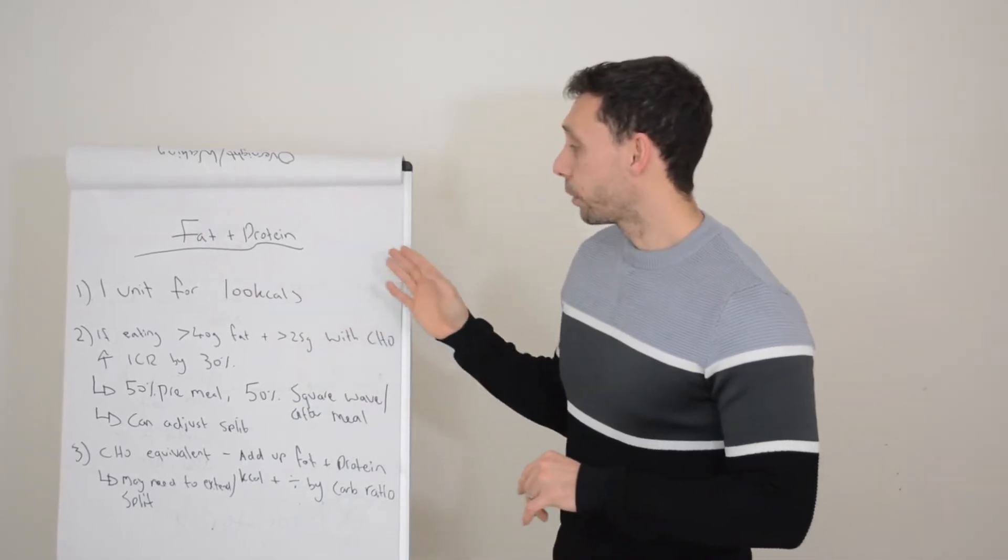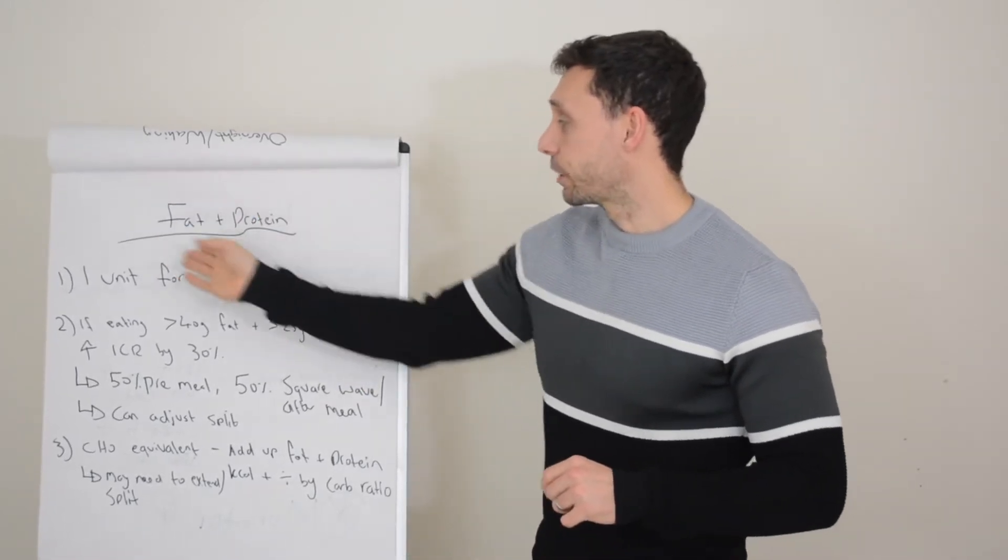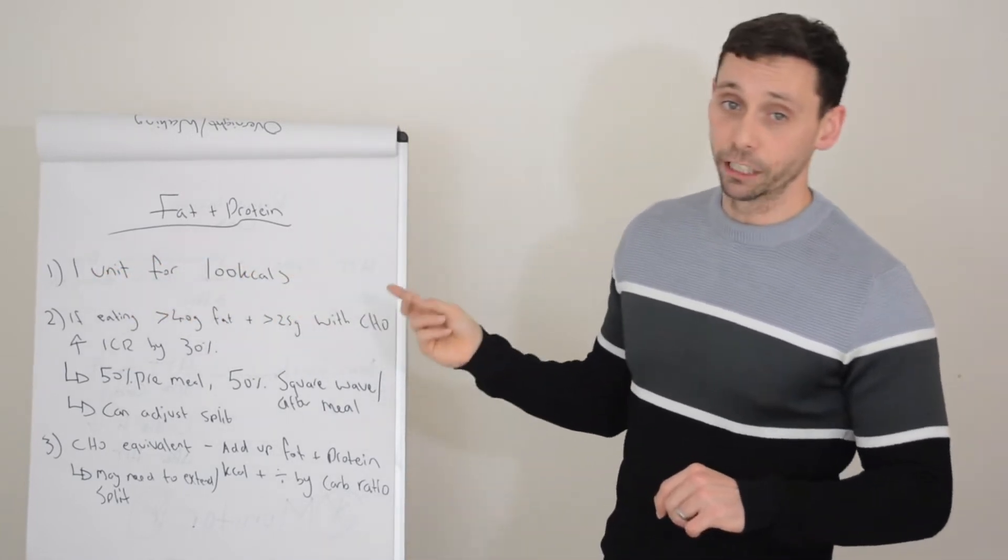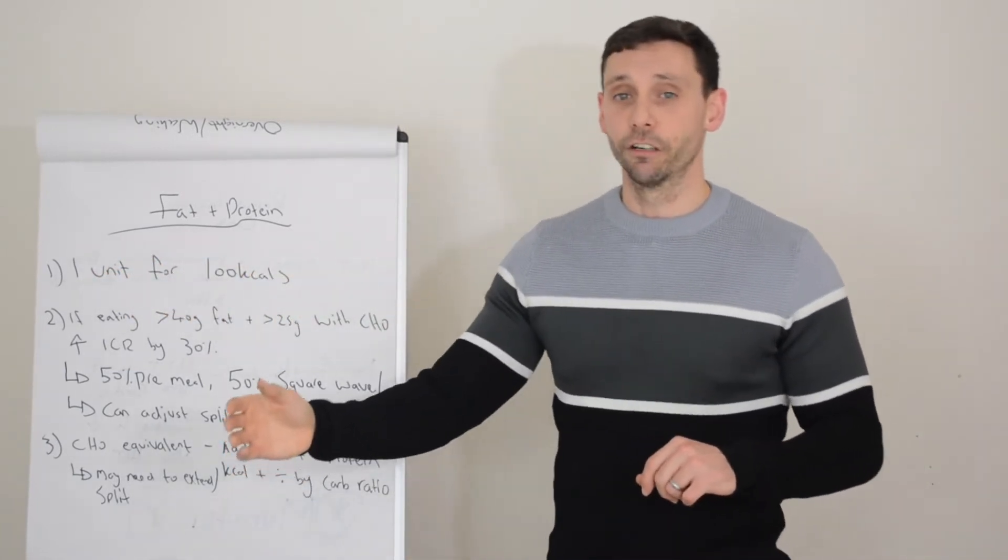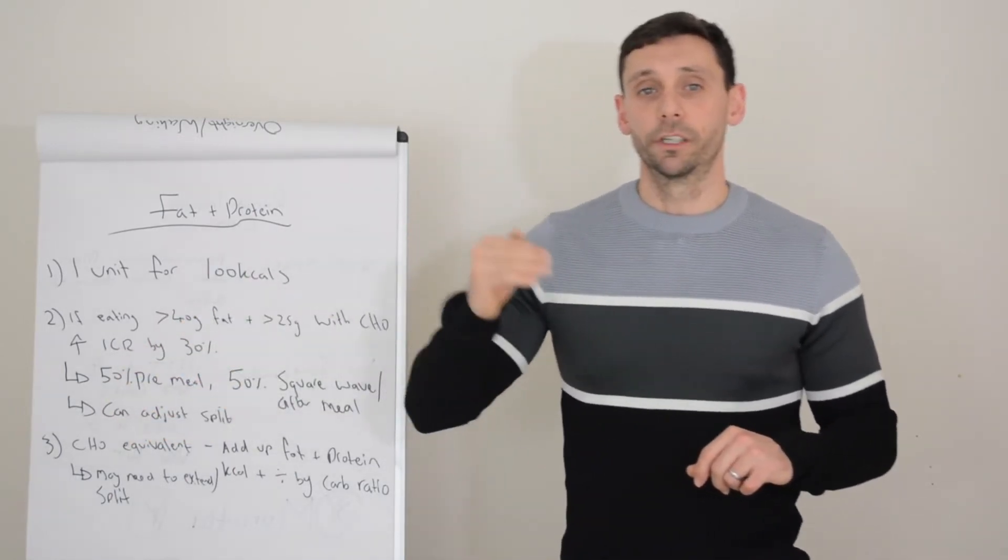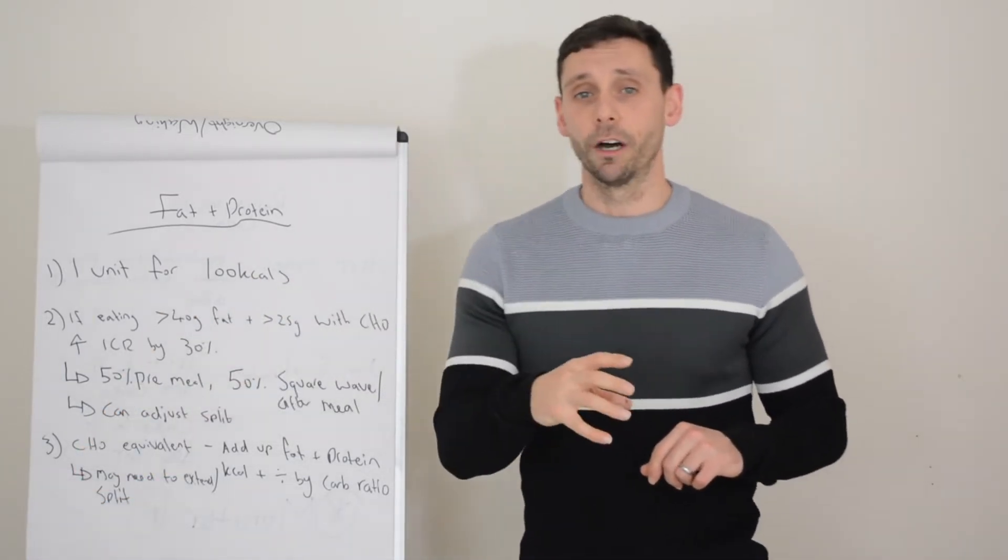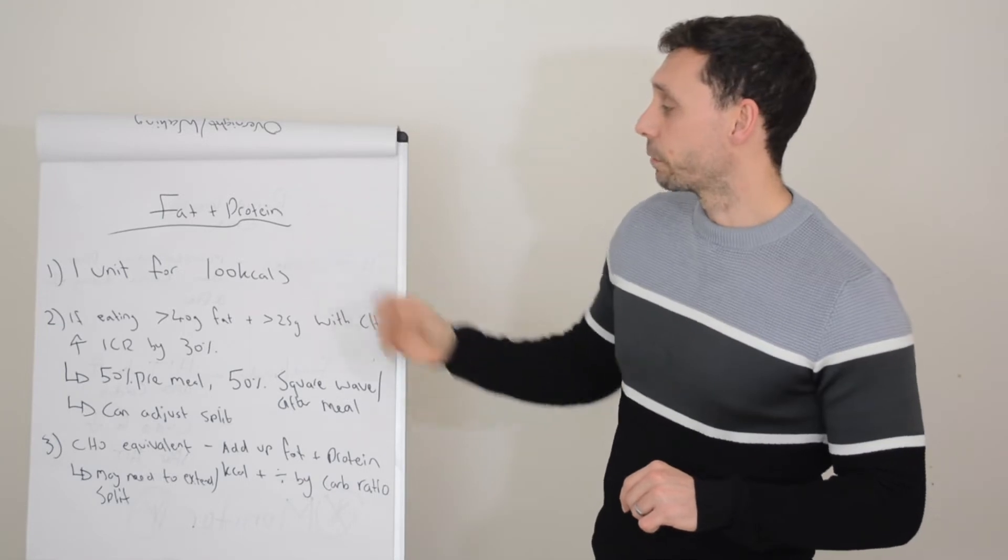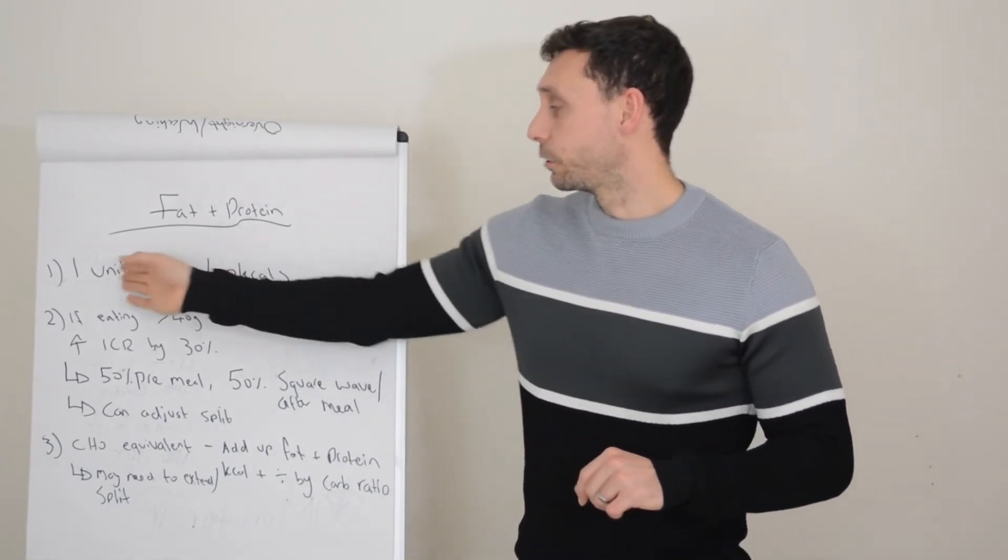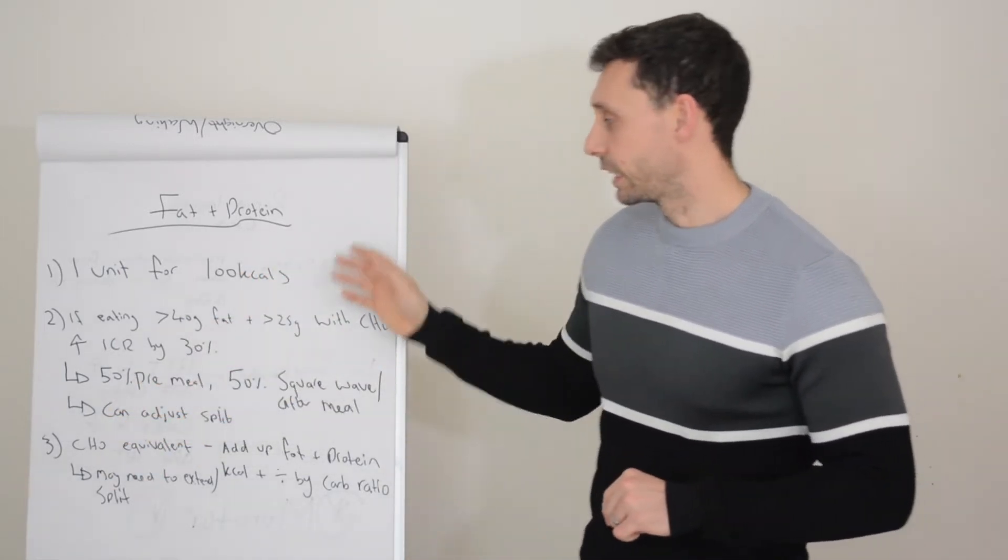So there's a thought process that if you calculate how many calories you're having from fat and protein and administer an additional unit for every 100 calories, it can help take the edge off. Now sometimes this might need to be taken after the meal because fat and protein is slower released compared to quick releasing carbohydrates. So you calculate how many calories you had and then you do one unit for every 100 calories on top of your carbohydrates. That's method one, probably the easiest one.